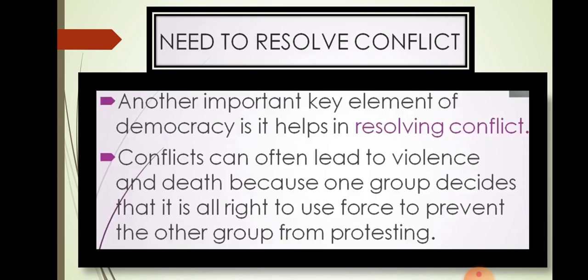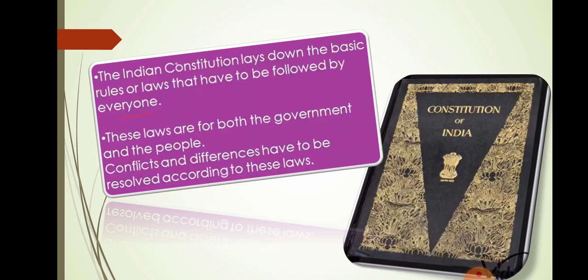Need to resolve conflict. Another important key element of democracy is that it helps in resolving conflict. Conflicts can often lead to violence and death because one group decides that it is alright to use force to prevent the other group from protesting. The Indian Constitution lays down the basic rules or laws that have to be followed by everyone. These laws are for both the government and for the people. Conflicts and differences have to be resolved according to these laws.